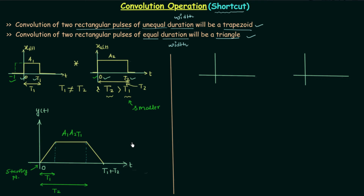When both signals have the same width, we get a triangle. This is because t1 equals t2, so the first and second time instants become the same point. The region in which the signal y(t) is constant collapses to a single point, giving us a triangle.